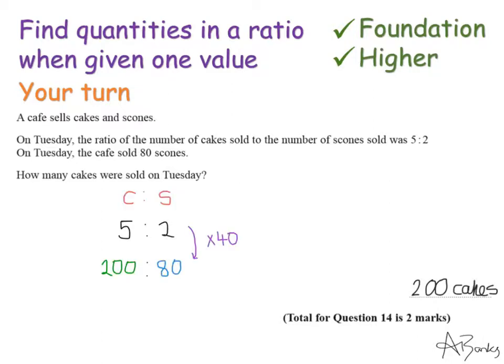Here's the solution. This one was slightly simpler - cakes and scones in the ratio 5:2. They want to know how many cakes will it be when scones is 80. So I'm multiplying to get from 2 to 80, multiplying by 40.